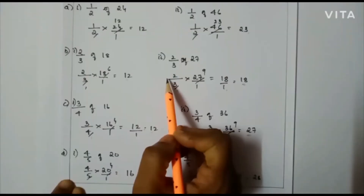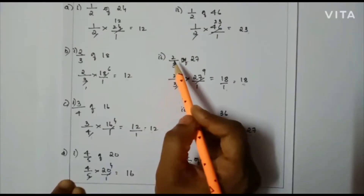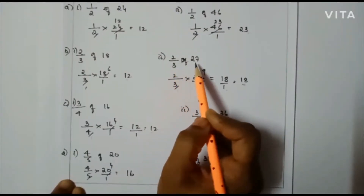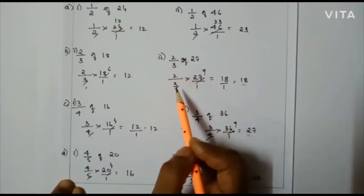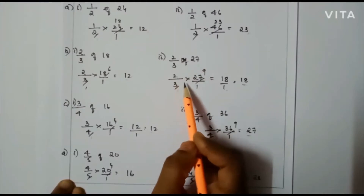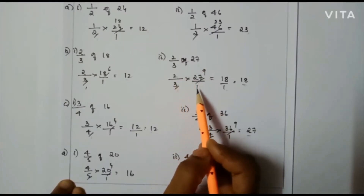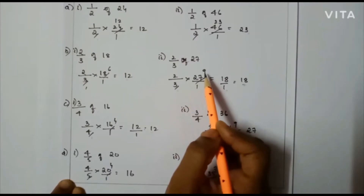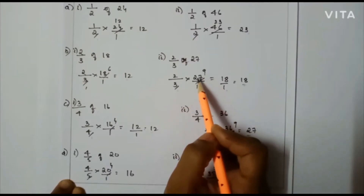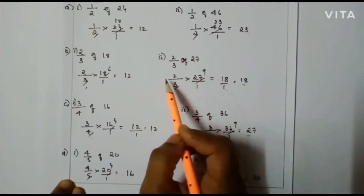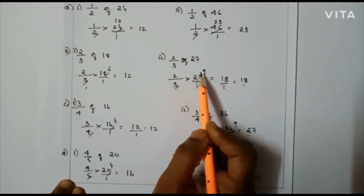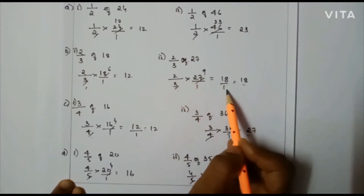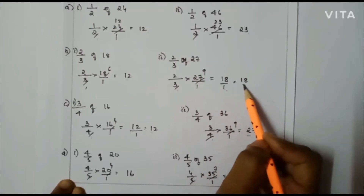Next case: 2/3 of 27, that is 2/3 × 27/1. Here I can cancel: 3 divides 27 giving 1 and 9. So 2 × 9 = 18 by 1, and the final answer will be 18.